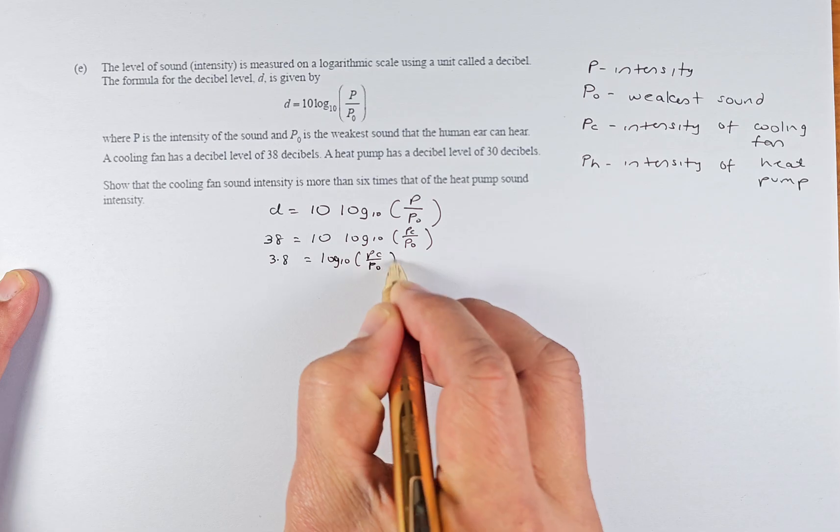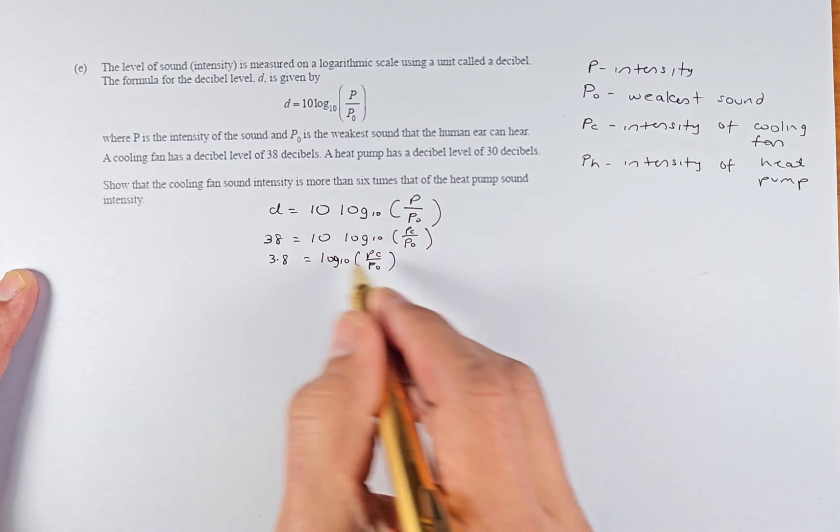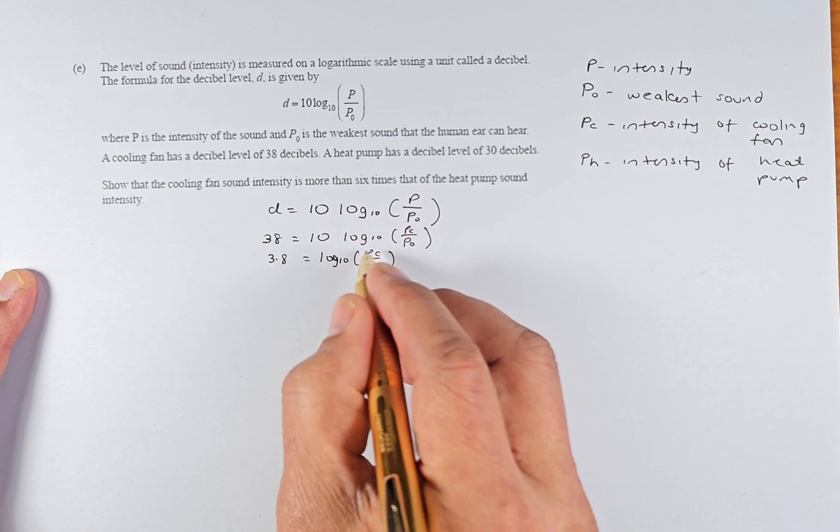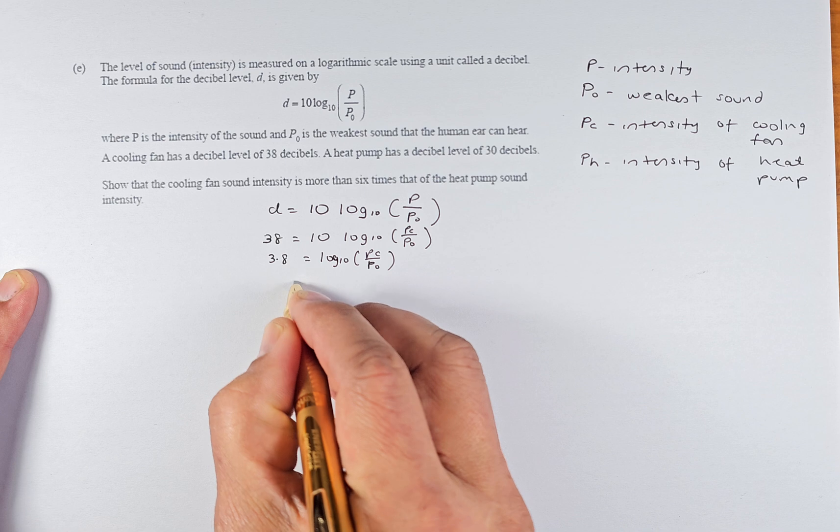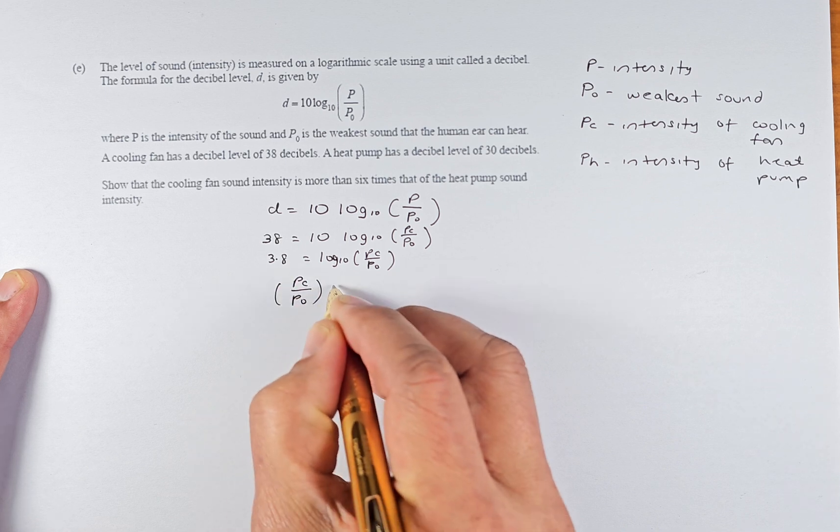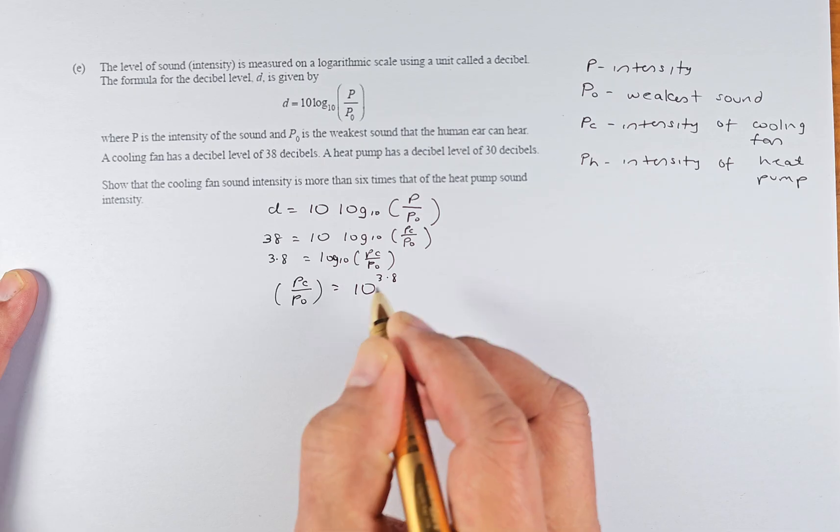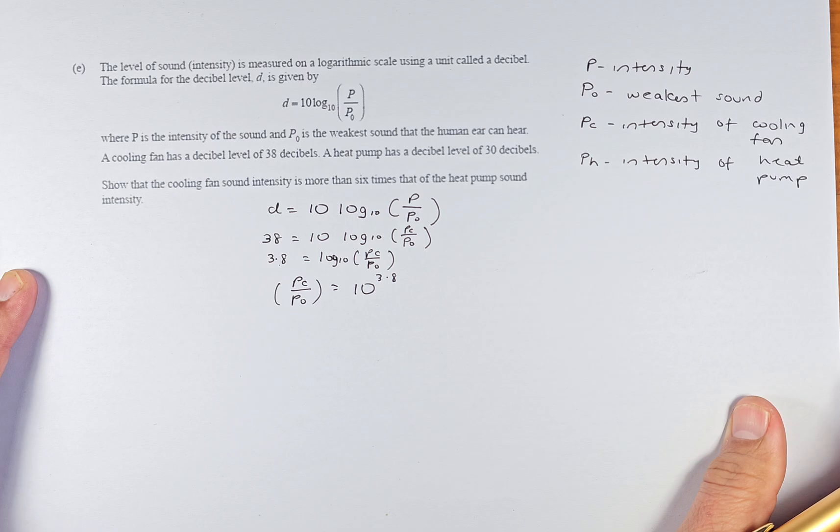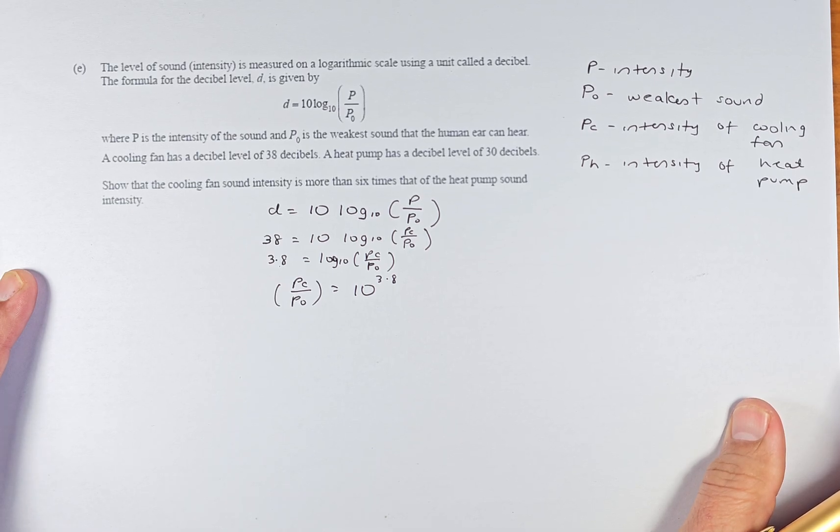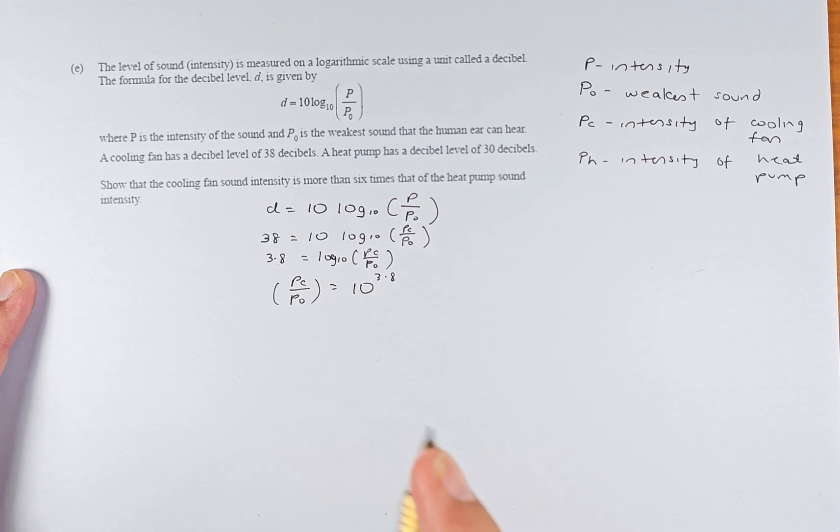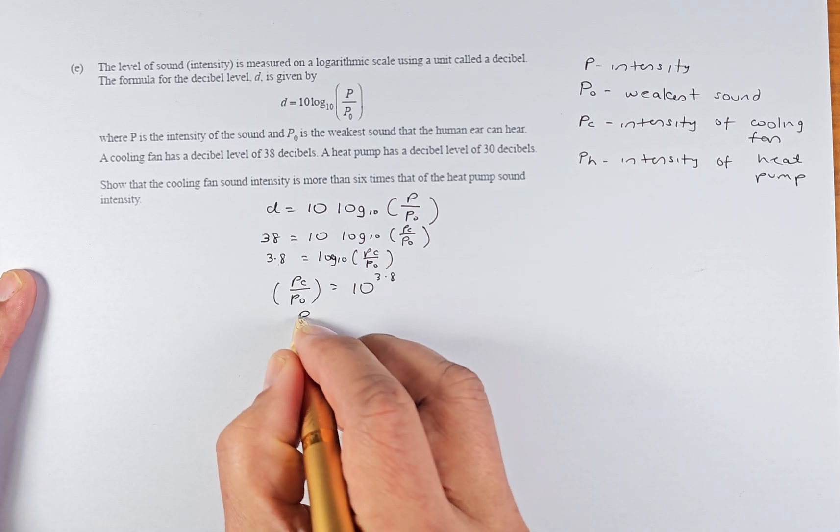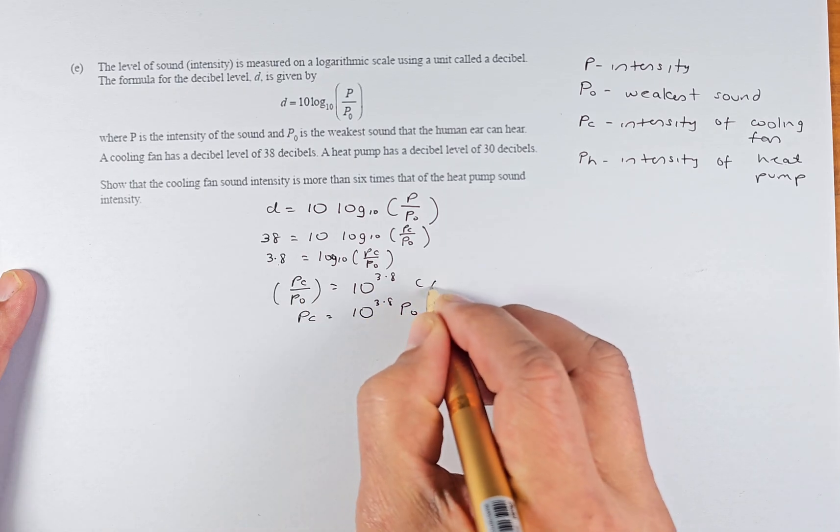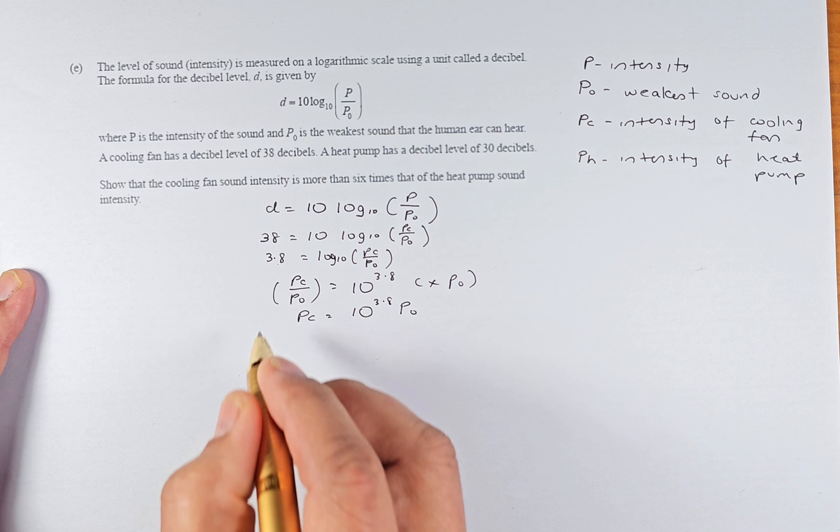The last number Pc/P₀ equals 10^3.8. The first number becomes your last number, your last number becomes your first number. So that is the formula to get your P of the cooling fan. To simplify, we multiply P₀ on both sides, so Pc = 10^3.8 × P₀. That is the first variable we know.